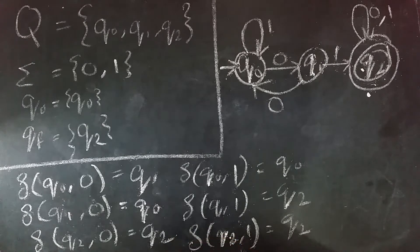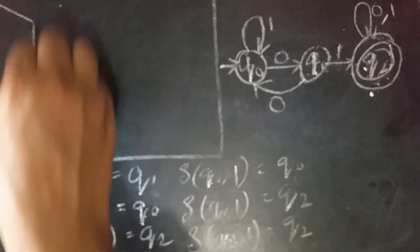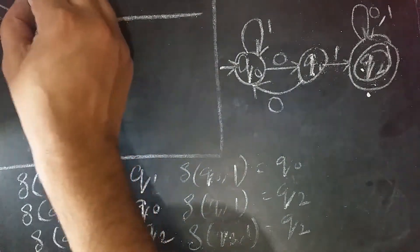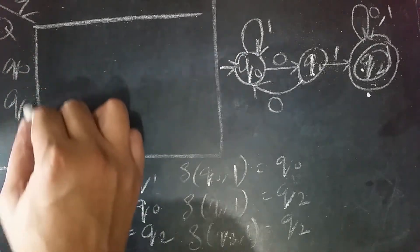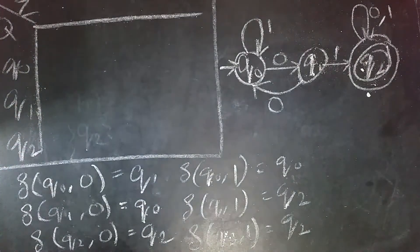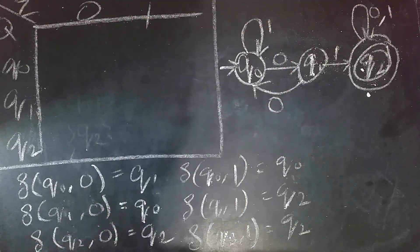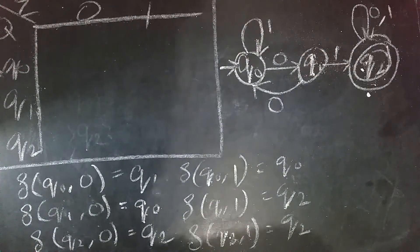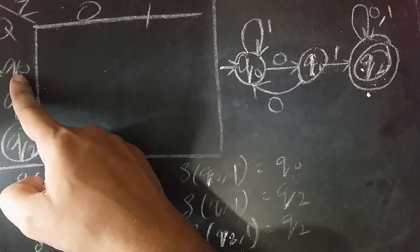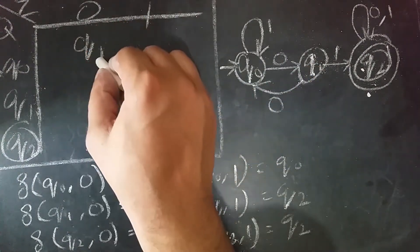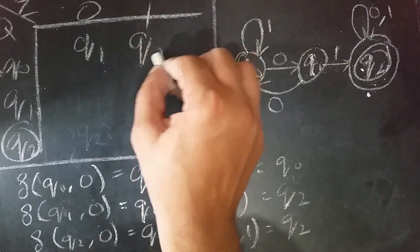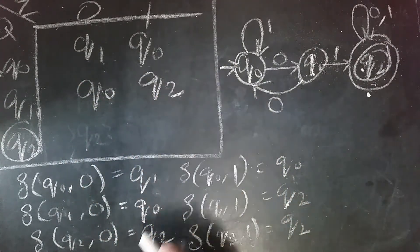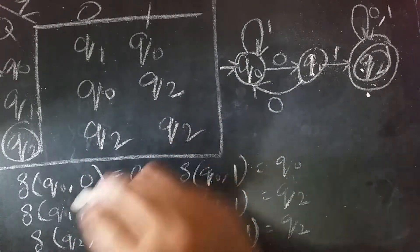There is one other way to represent — the transition table. On one side we write all the states, and on the other side all the inputs. The states are Q0, Q1, and Q2, and the inputs are 0 and 1. Q0 is the initial state, represented by a small arrow; Q2 is the final state, represented by a circle. On Q0, if 0 comes, go to Q1; if 1 comes, go to Q0. For Q1, if 0 comes, go to Q0; if 1 comes, go to Q2. On Q2, for both transitions, we remain on Q2. This is the transition table.